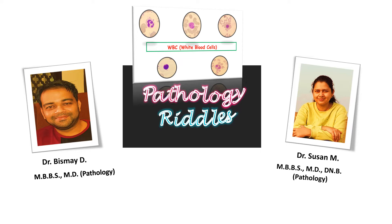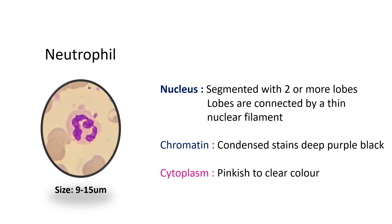How do they look? Which are the conditions where they increase? When do they reduce? What is the normal count? That is what we are going to deal with in today's class. Starting with the WBC that is predominant in the adult population — it is the neutrophil.